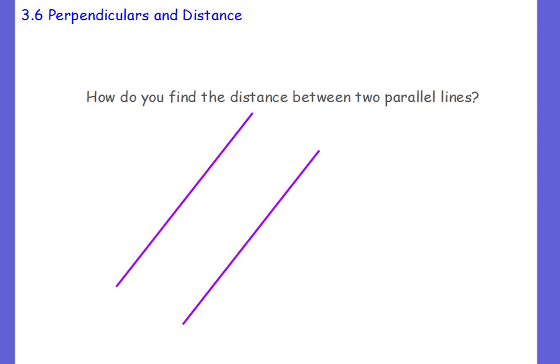All right, so we just looked at how to find the distance between a line and then some point that's not on the line. The last thing we're going to look at in this chapter, or in this section, is how to find the distance between two parallel lines.